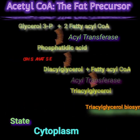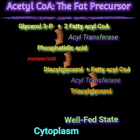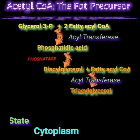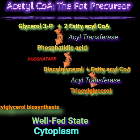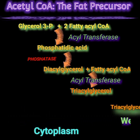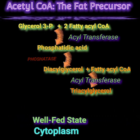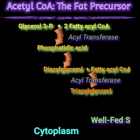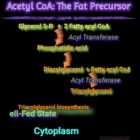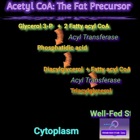Two fatty acyl-CoAs are sequentially condensed with glycerophosphate to produce phosphatidic acid, which is then converted to diacylglycerol by a phosphatidic acid phosphatase. A third fatty acyl-CoA is condensed with diacylglycerol to form triacylglycerol.